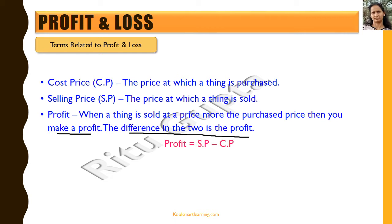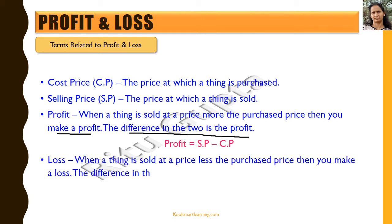So profit is: Selling Price minus Cost Price, and this happens only when the selling price is more than the cost price. Loss is when a thing is sold at a price less than the purchased price. For example, the shopkeeper bought a pen for 3 rupees and sells it for 2 rupees — that is a loss. So loss is: Cost Price minus Selling Price, i.e., CP minus SP.